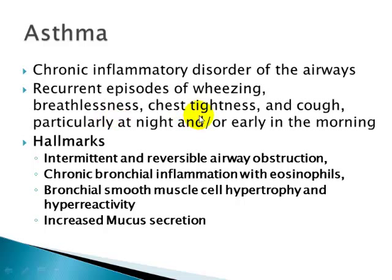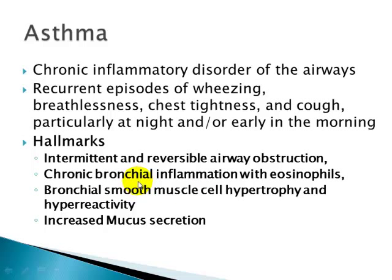There are certain triggers which lead to bronchospasm and increased airway activity, causing intermittent and reversible airway obstruction. The word 'reversible' is important — asthma is a reversible obstructive pulmonary disease, unlike the other three obstructive diseases which are completely irreversible. There is also chronic bronchial inflammation, which is a very important feature.